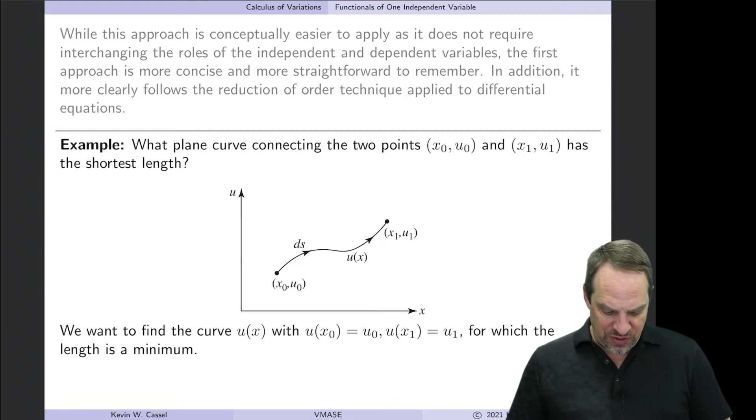So we have a curve that starts at (x0, u0) and ends at (x1, u1). So this is me, and this is my lunch. I want to determine the path u(x) that gets me from my current location to my lunch in the shortest distance, the shortest length.